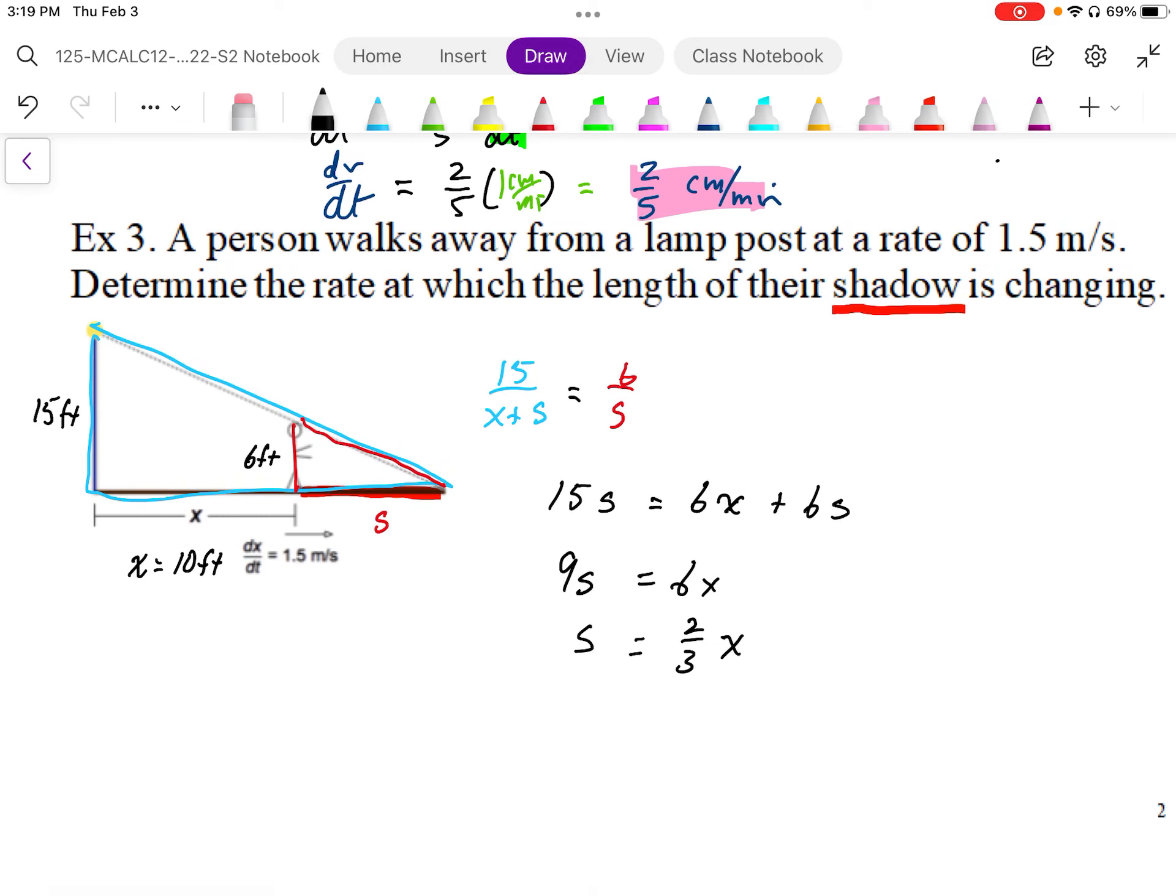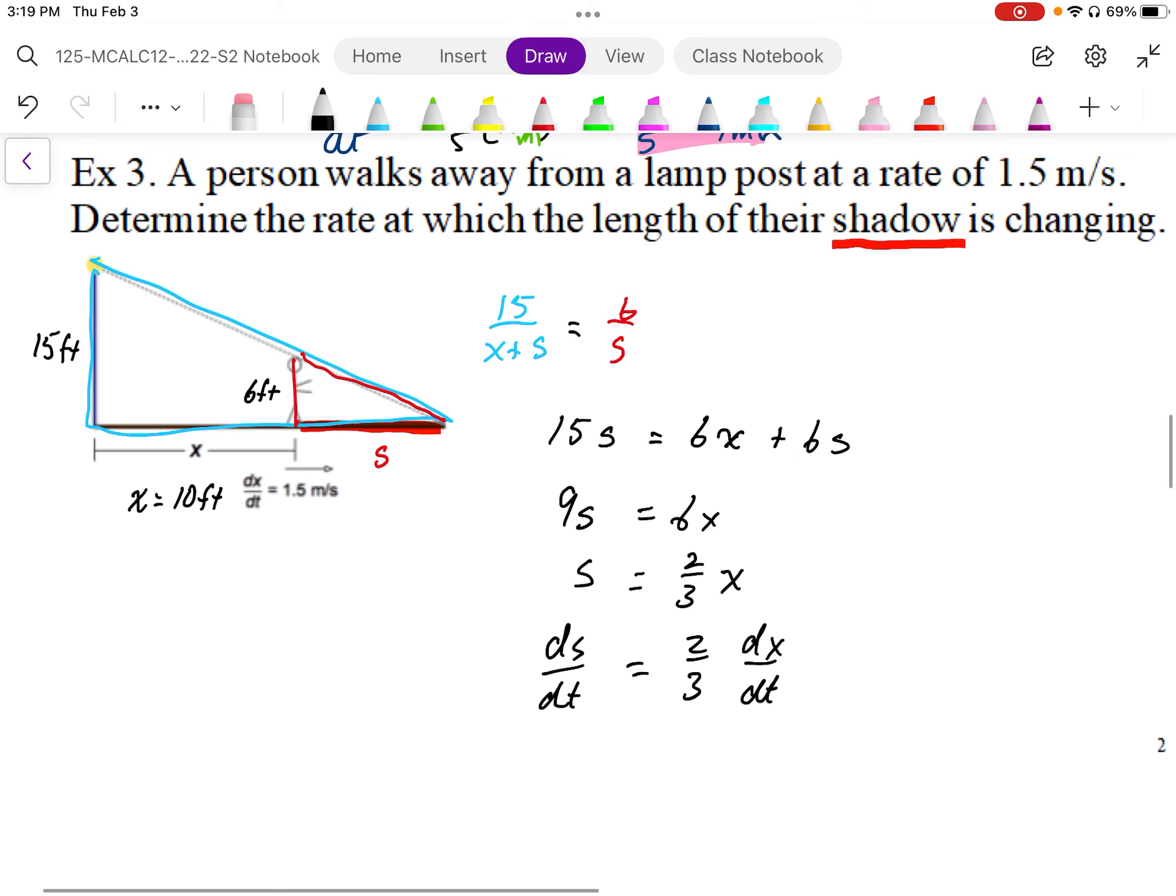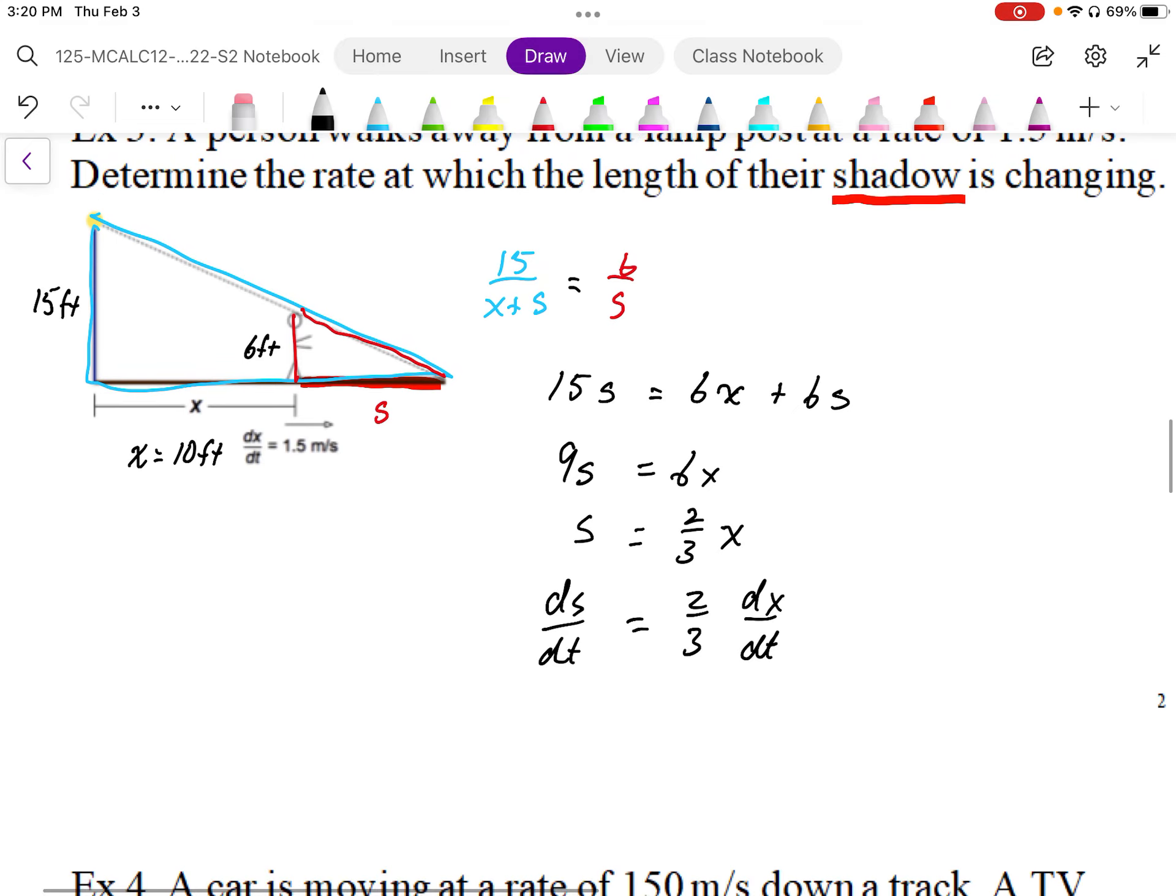Okay, so once we have that relationship, we're just going to find ds by dt by differentiating with respect to time. And that's going to be 2 thirds. And differentiate x with respect to time is going to be dx by dt. So then, this basically is a ratio. The speed at which the shadow changes is going to be 2 thirds the speed at which the x changes.